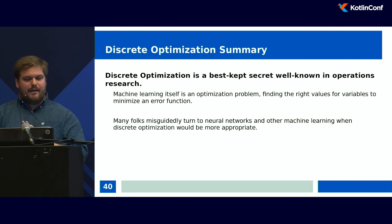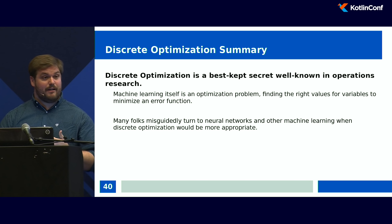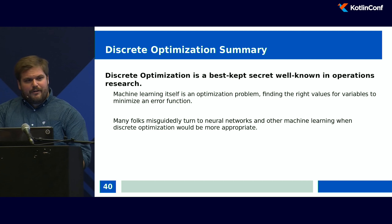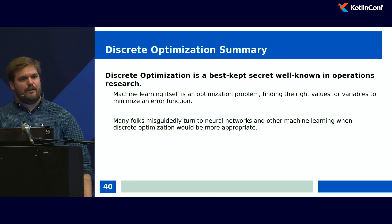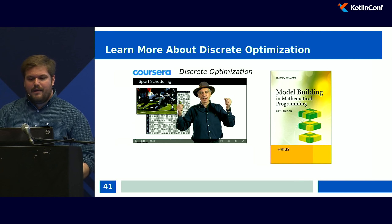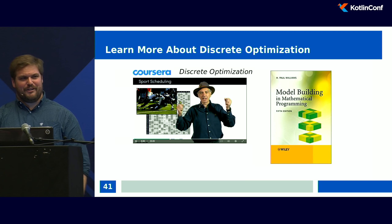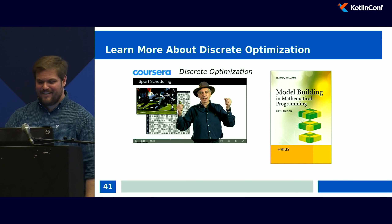To summarize discrete optimization: it's a best-kept secret well-known in operations research. As we'll discover, machine learning itself is often an optimization problem — finding the right variables to minimize an error function. A lot of folks think of neural networks when they think of solving non-deterministic problems, but hopefully I've shown there's a large problem space to use discrete optimization for. Two recommended Java libraries: OJ-Algo, which I use in many examples, and OptiPlanner. For learning more, there's a Coursera class that is the best resource — it will challenge your programming skills and get you comfortable with recursion.